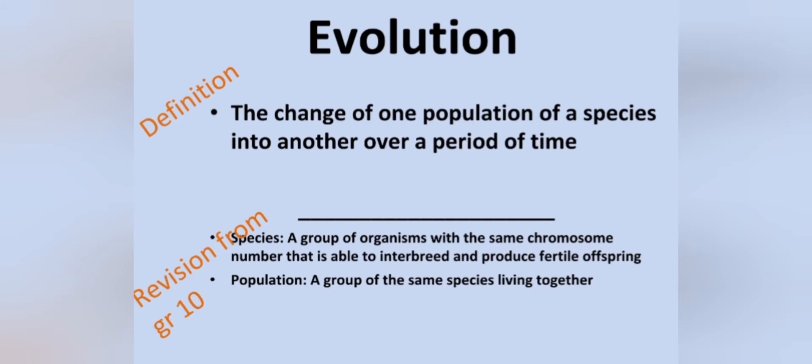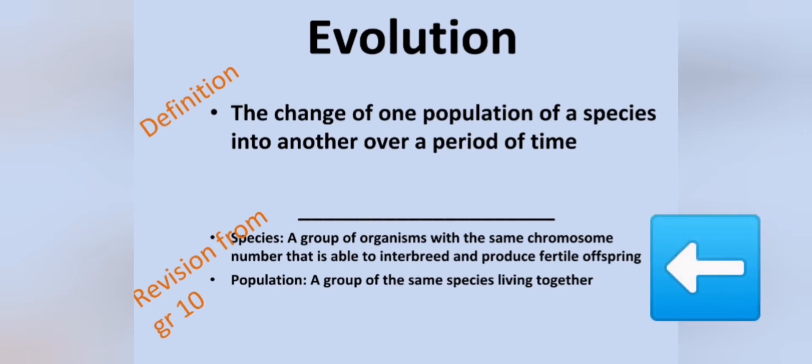But what does the term species mean? In case you forgot, again in grade 10 we learned that a species is a group of organisms with the same chromosome number that is able to interbreed and produce fertile offspring. We also looked at a population, which is a group of the same species living together in an area.